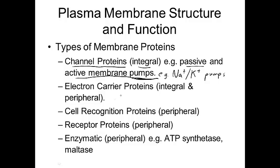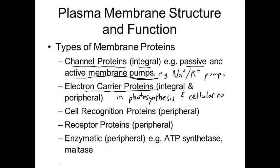Another group of proteins in the plasma membrane are the electron carrier proteins. This is a whole series of proteins, both integral and peripheral, that act to carry electrons. These are important in photosynthesis and cellular respiration, and we'll learn more about that later in the course.